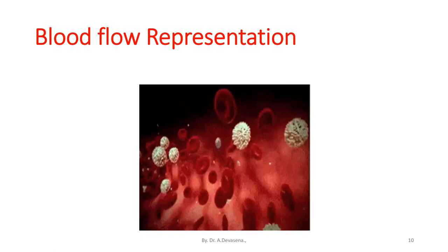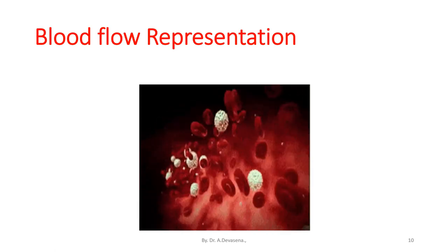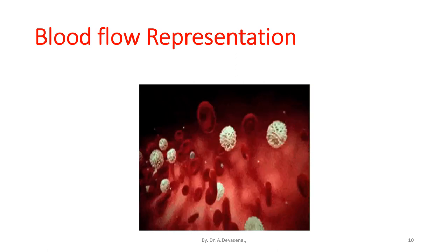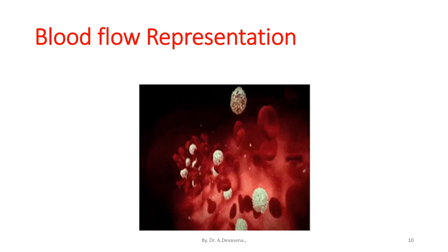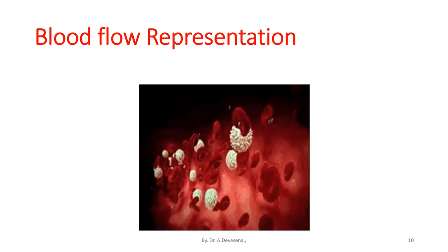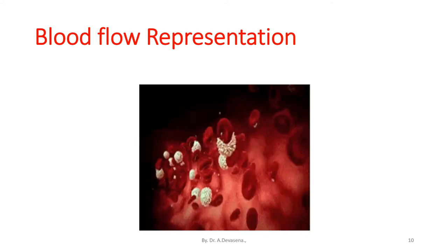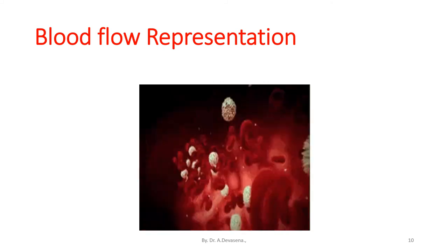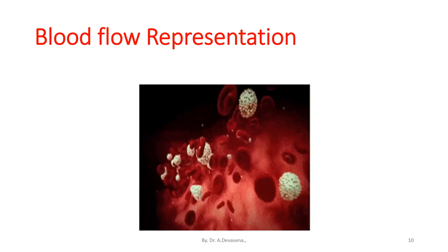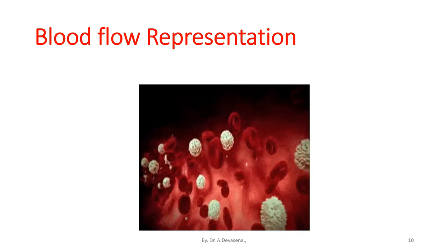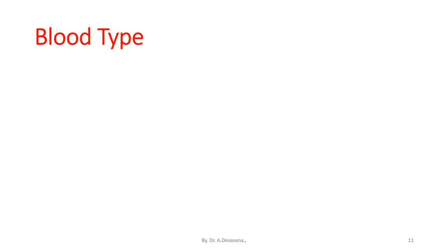In this diagram we are seeing the flow of blood inside the blood vessel. The blood comprises of red blood cells, white blood cells, and platelets. These are shown in this figure. So far we have discussed about the components of the blood. Let us discuss about the blood type and the groups formed in the blood.